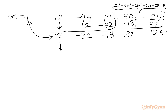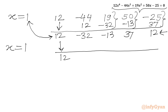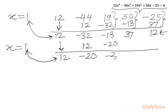Now for Stage 2, we consider the leading coefficient as it is and write 12 here. Multiplying 1 with 12 again: 1 times 12 is 12; minus 32 plus 12 is minus 20. Then 1 times minus 20 is minus 20; addition gives minus 33. Then 1 times minus 33 is minus 33; 37 minus 33 gives 4. So 4 is our remainder, and the remaining three numbers are coefficients for the quadratic expression.